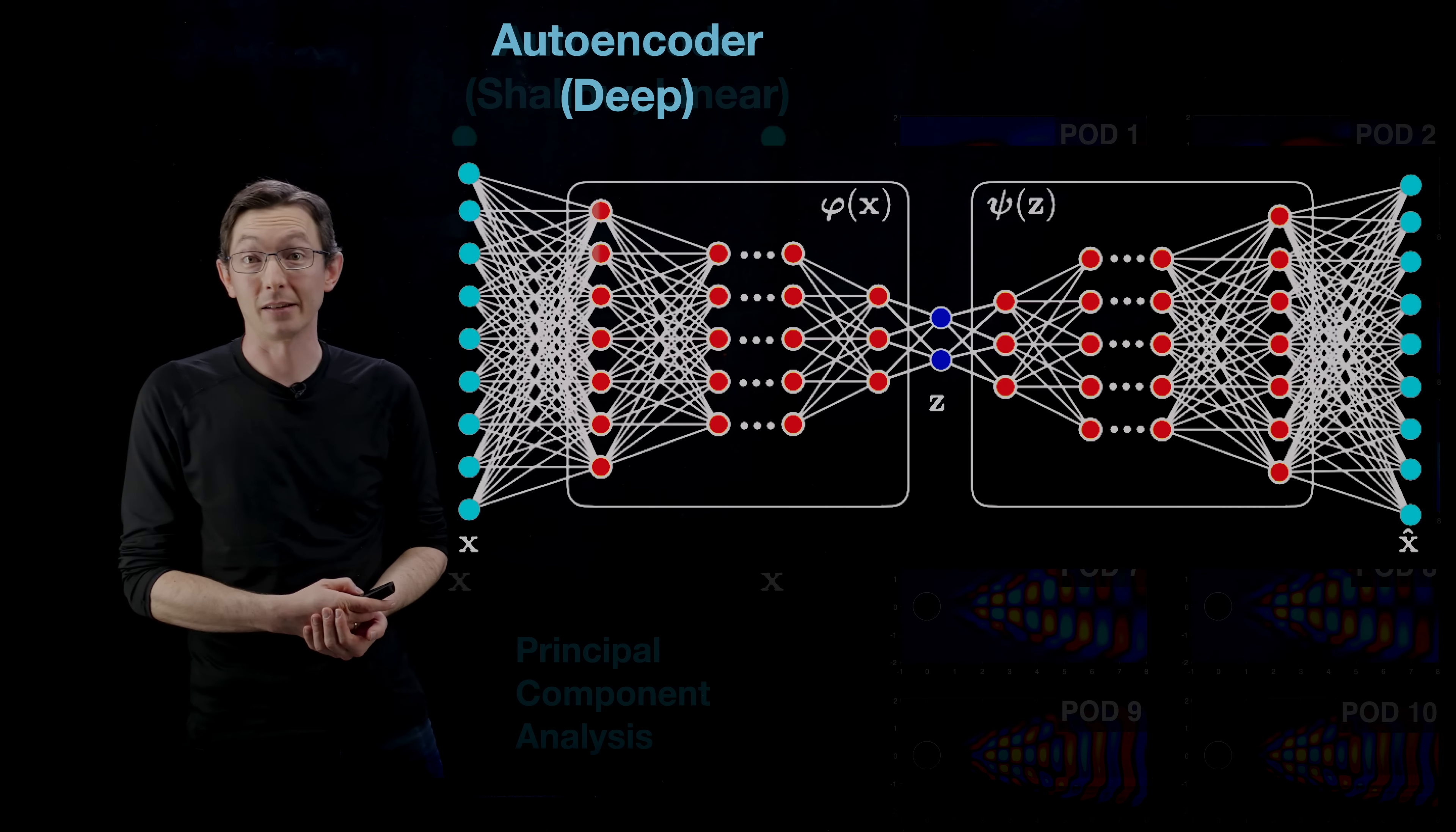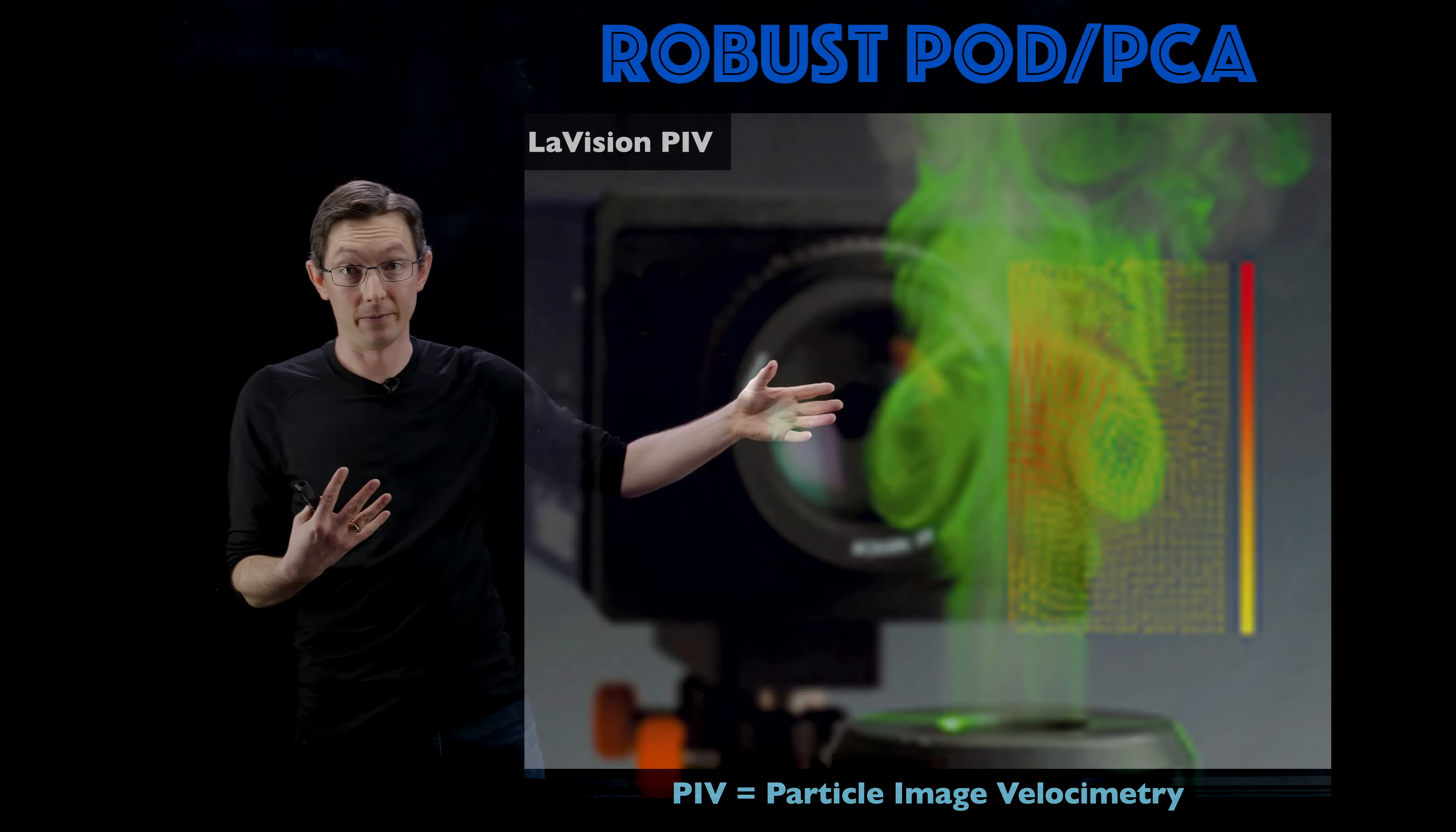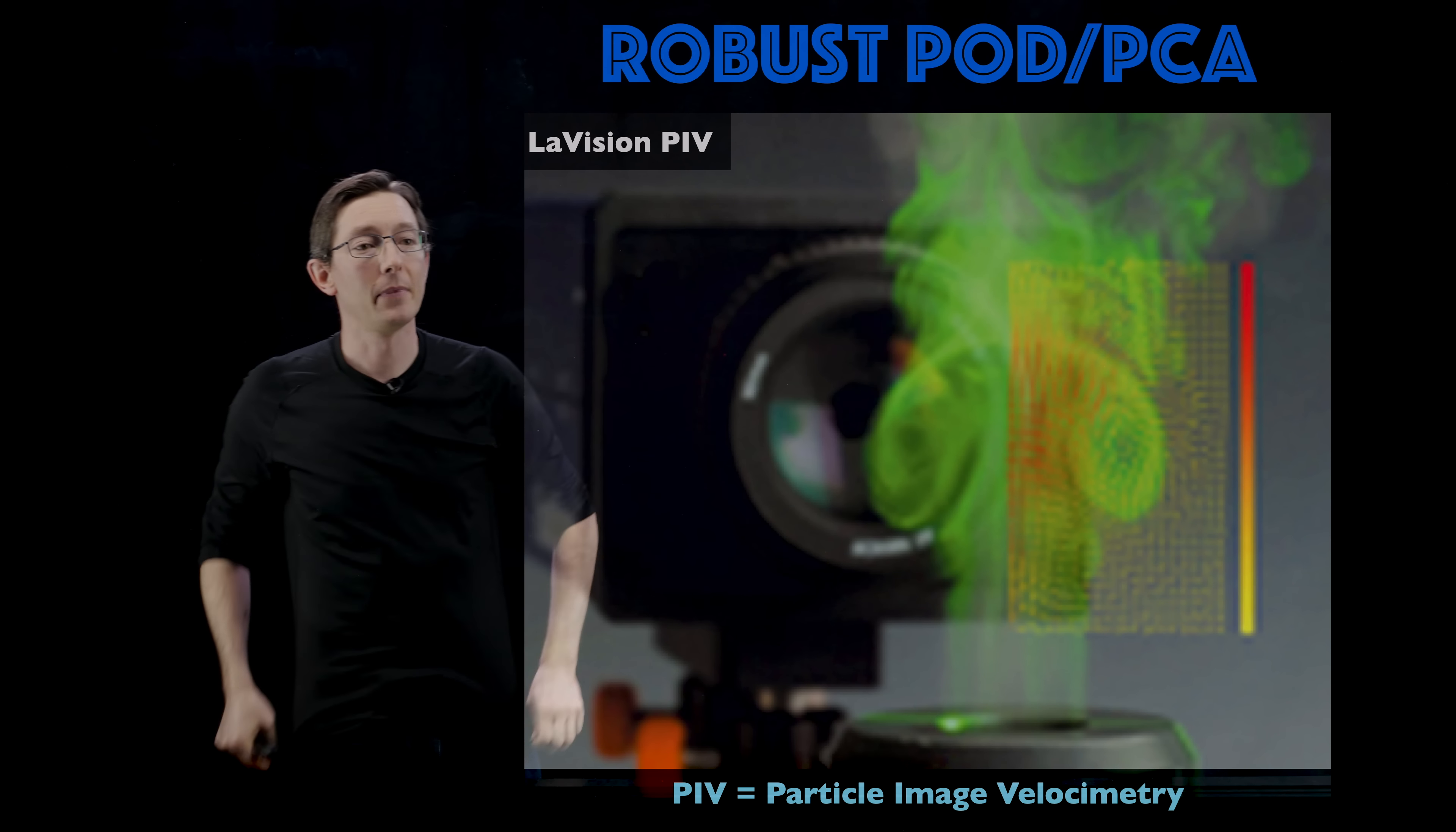Once you have that notion that low dimensional patterns exist in your data, you can do a lot of things like robustify the extraction of these patterns if you have noisy data or corrupt data or data with outliers. This is the idea of robust POD or robust PCA - a riff on an emerging field of robust statistics that we're applying to fluid mechanics. In particular, we're applying this to fluid mechanic systems like experimental measurements of a flow field using laser sheets. This is particle image velocimetry, a technique where you can measure the flow velocity field non-invasively by shining a laser sheet through the flow and taking high-speed images of how particles in that laser sheet move.